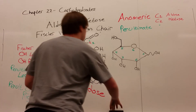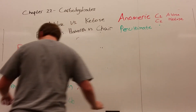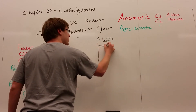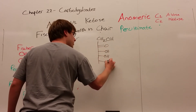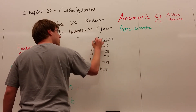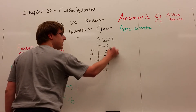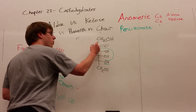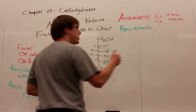Now let's look at how the ketose is different. For a ketose: CH2OH at the top, then a carbonyl at carbon 2, then OH groups on carbons 3 and 4, giving 6 carbons with CH2OH at the bottom. What forms the ring is again the penultimate OH attacking the carbonyl. Numbering from carbon 1 through to carbon 5 where the oxygen attacks, I'm making a 5-membered ring with this ketose.